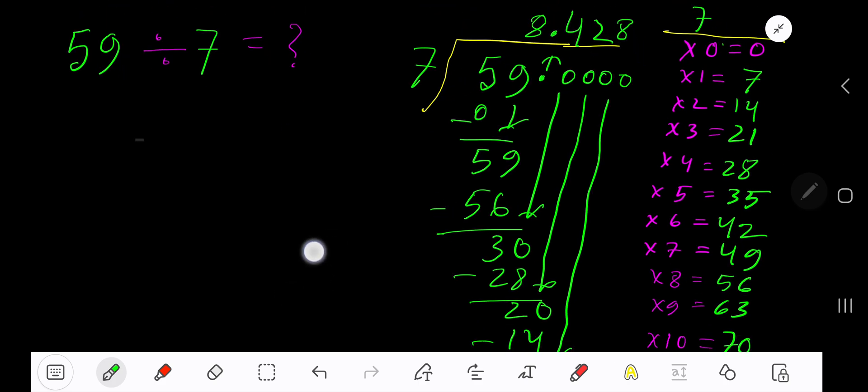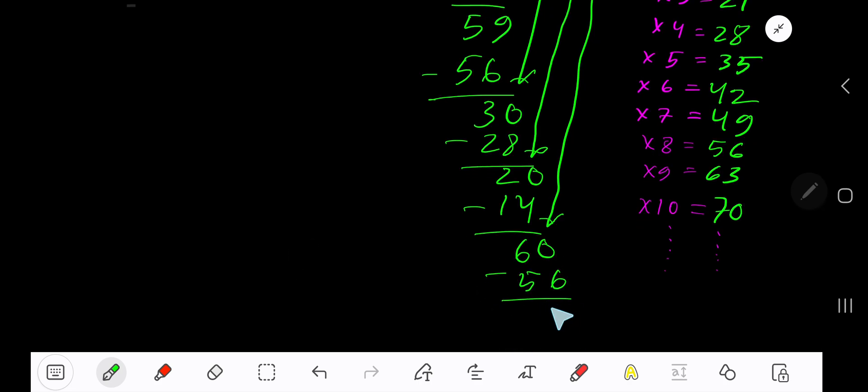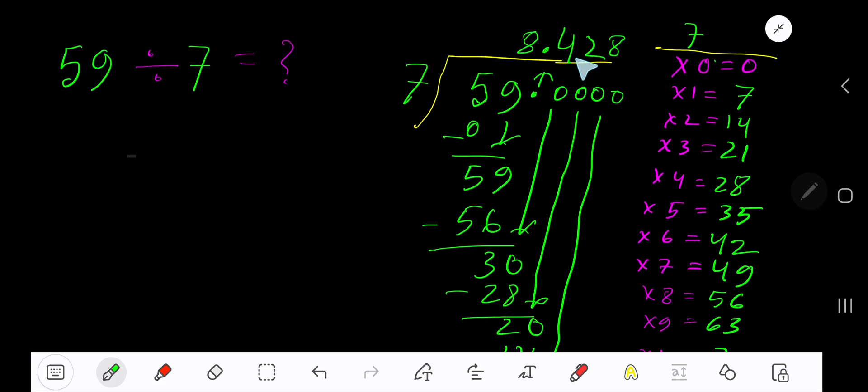You are getting 4. You can bring down more zeros, but since we have gotten 3 places after the decimal, the answer is 8.428 dot dot dot.